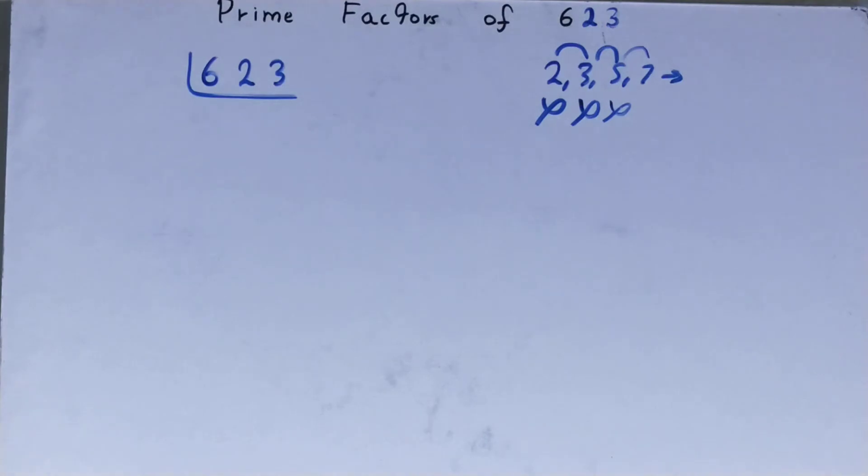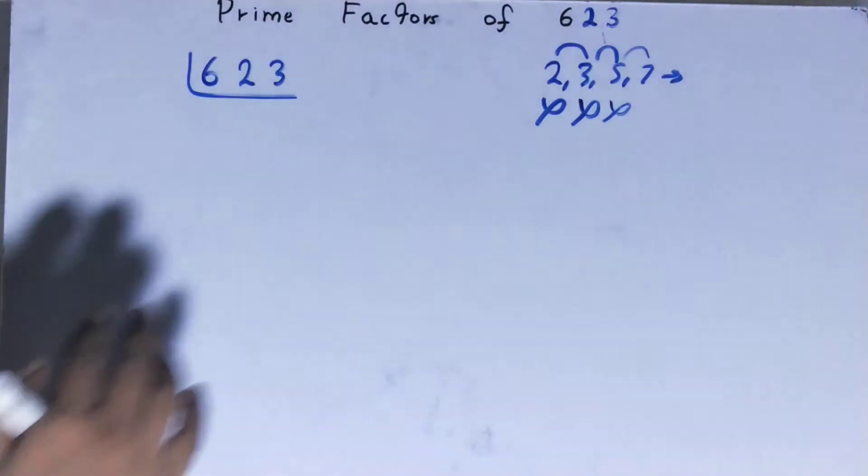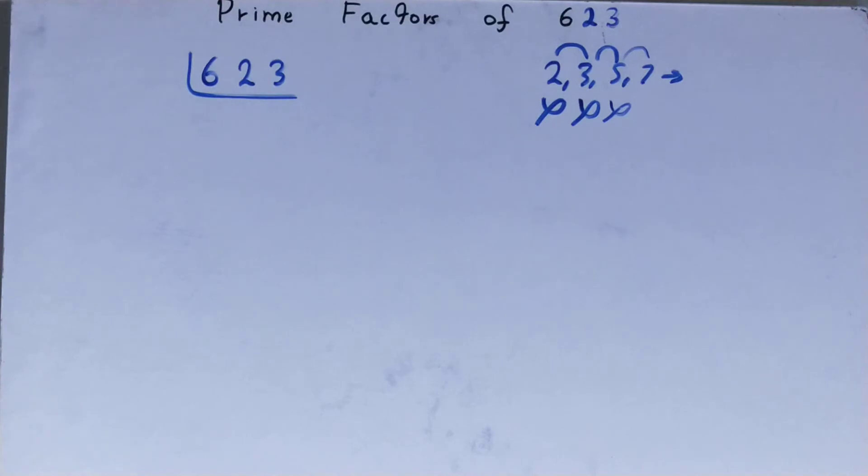Let's check it with 7 now. Is it divisible by 7? Let's check. 7 times 8 is 56... 63... yes, it is divisible by 7.